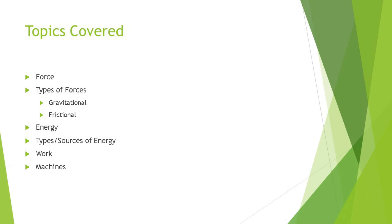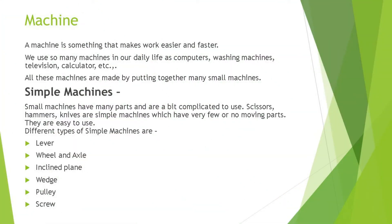Now in this part of the video we will discuss about different types of simple machines. A machine is something that makes work easier and faster. We use so many machines in our daily life — computers, washing machines, televisions, calculators, etc. These machines are made by putting together many small machines. A simple machine is a device that makes our work easier and faster.